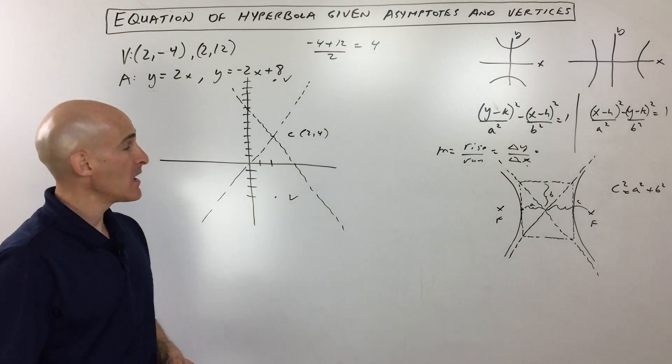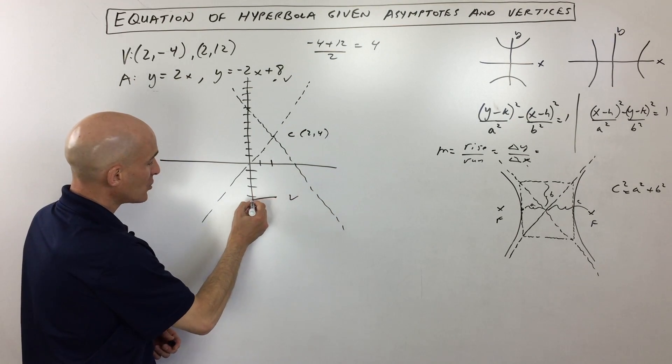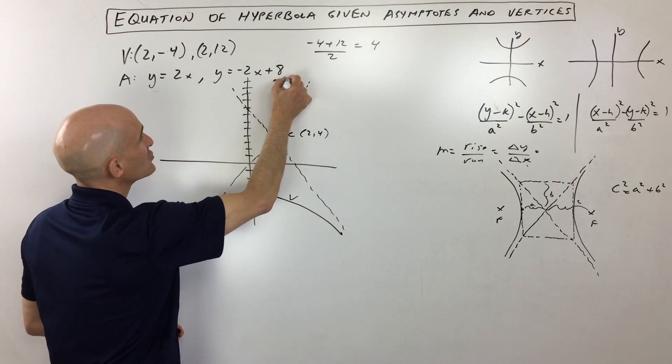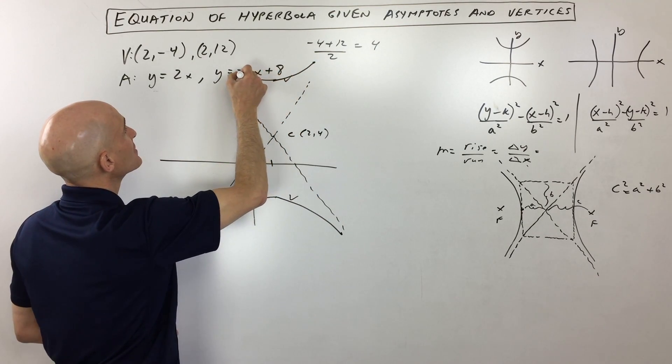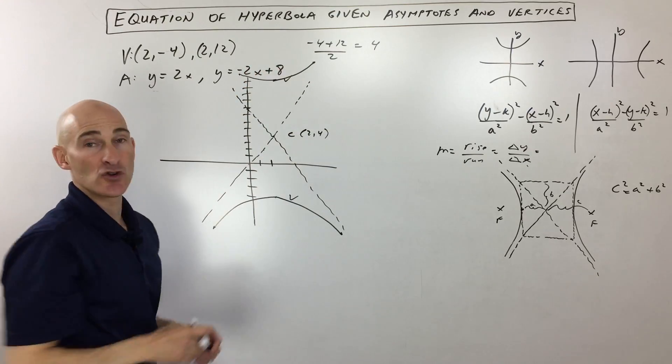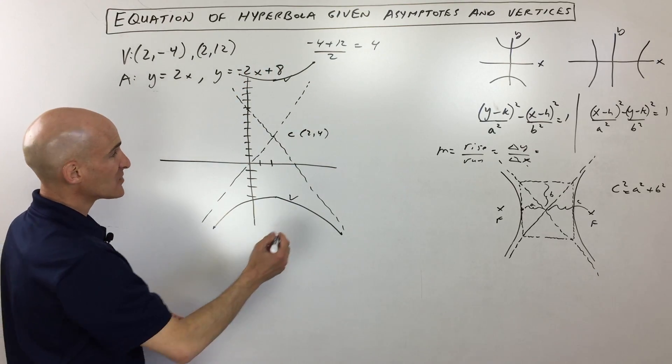Okay, approximately right. And then we know that the hyperbola gets closer and closer to those asymptotes. So I'm just drawing a quick sketch here for us so we can see that it's opening up and down.